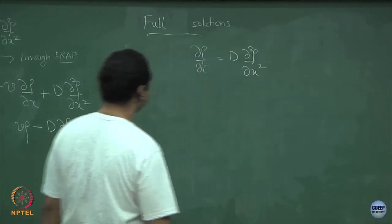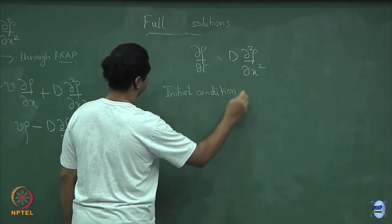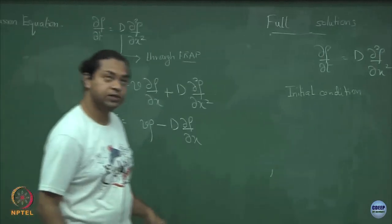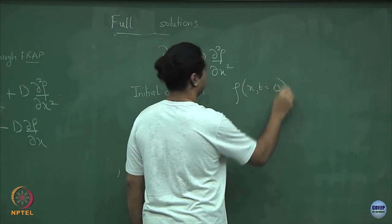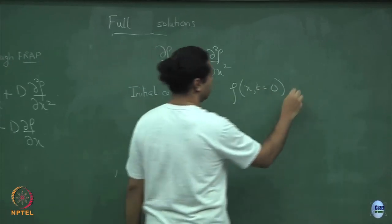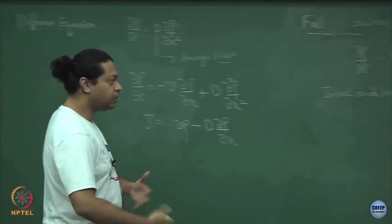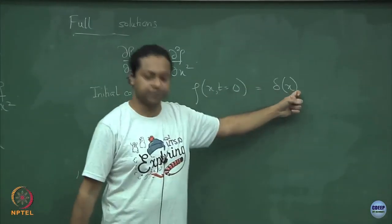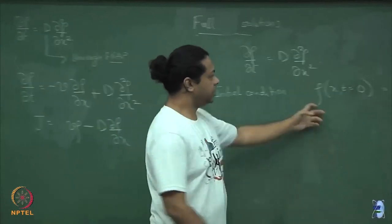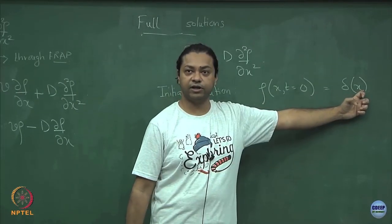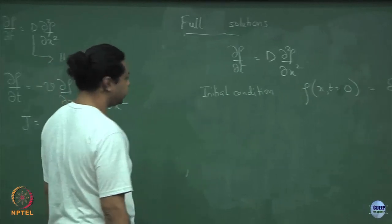Let me first solve the equation without drift: del rho del t equals D · del squared rho del x squared. I need to specify an initial condition — let me take a delta function. So rho at x, t=0 is delta(x), meaning the particle started off at a given position. This is a good probability density because it is automatically normalized: integrating the delta function over space gives 1. We will solve this using Fourier transforms.